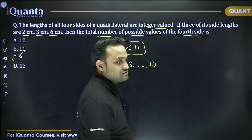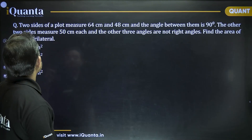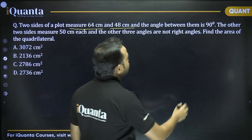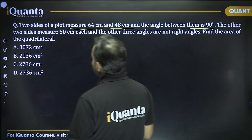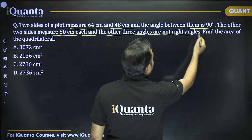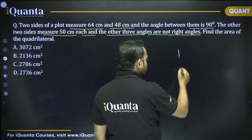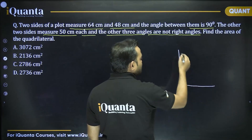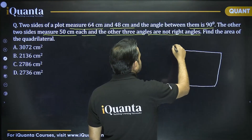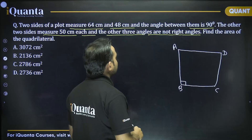So the fourth side x can take integer values 2, 3, 4, 5, 6, 7, 8, 9, 10 — a total of nine values. Our answer is option C. Next question: two sides of a plot measure 64 cm and 48 cm, the angle between them is 90°, the other two sides each measure 50 cm, and the other three angles are not right angles. Find the area of this quadrilateral.